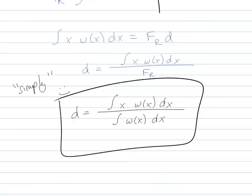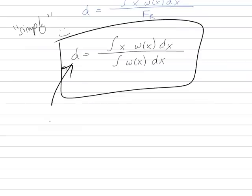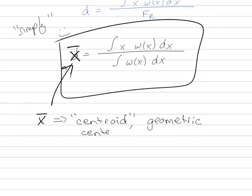Now, most of the time, whenever you are working these problems, like on a triangle or like a known shape, a lot of these integrals are already calculated for you. In fact, there's a special name for this distance. This we'll actually call X from now on, X bar, is actually called the centroid, or the geometric center of the object, of the area under the loading curve.